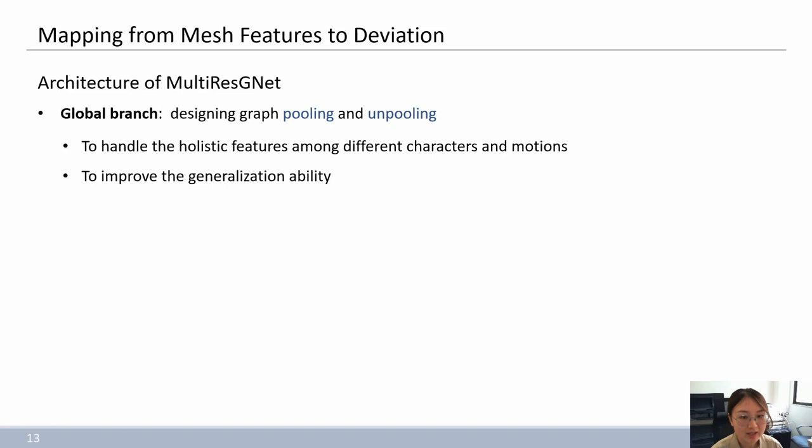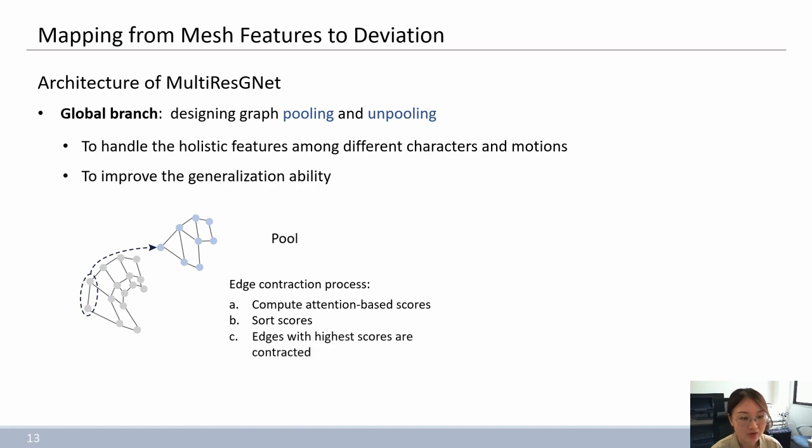Specifically, we define the graph pooling and output pooling strategies. For graph pooling, we present an edge contraction operation which follows the attention mechanism to calculate the edge scores. First, we compute the edge scores of each pair of nodes. Then we sort out the scores. Finally, edges with highest scores are contracted.